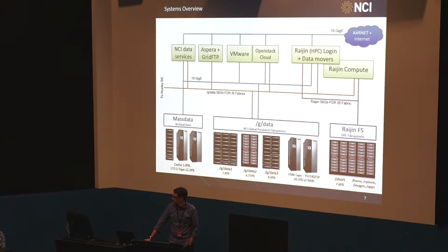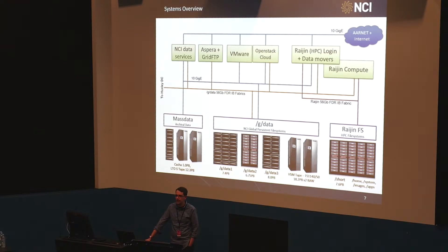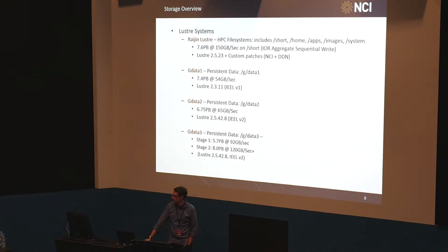We've got three broad tiers of storage: archival data systems, our GDATA system stores available across the entire facility, and our scratch file systems. What I'll talk about today is mainly the GDATA file systems - these persistent, long-lived data stores - and how to deal with growing capacities. Our smallest file system has a 54 gigabytes-per-second read performance peak, through to GDATA2 which can get up to 120 gigabytes per second.